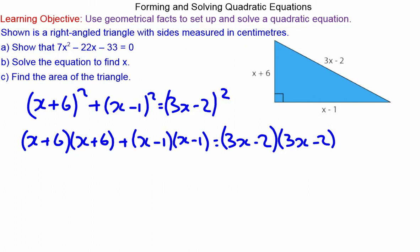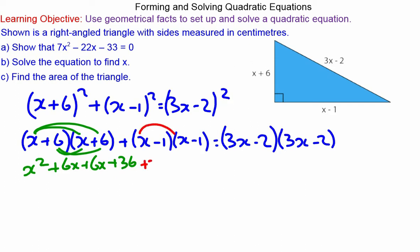We begin with (x+6)²: x times x makes x², x times 6 makes 6x, and again, giving 12x, and 6 times 6 makes 36. Moving on to (x-1)²: x times x makes x², x times negative one makes negative x, and again, giving negative 2x.